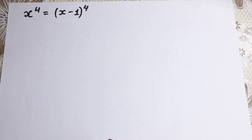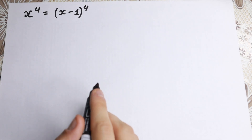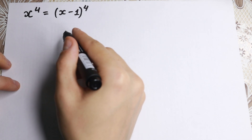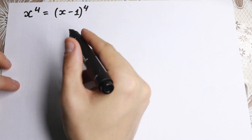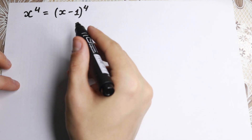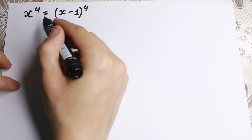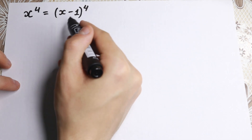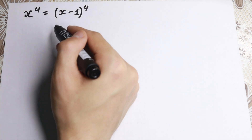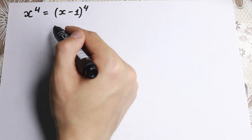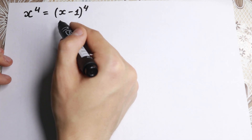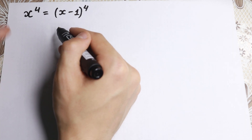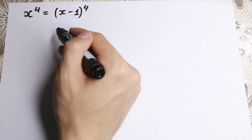Hello my friend, happy to see you here — really interesting math problem today. x to the fourth equals x minus one to the fourth power. A lot of students make this mistake: they just cancel the exponents, taking the fourth root on both sides to get x equals x minus one, and conclude x equals one half.